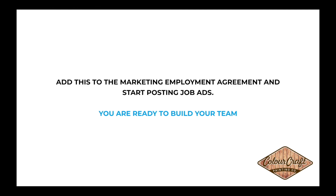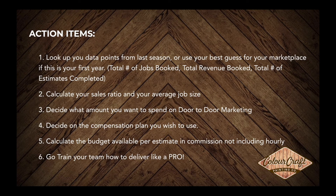Once you know these numbers you can put them into employment agreements and have new hires sign off on the compensation plan. Action items: look up your data points from last season — if you ran your own territory look up all your data, or use best guesses if it's your first year. You need the total number of jobs, total revenue booked, and total number of estimates completed. With those three numbers you can backtrack and calculate everything.